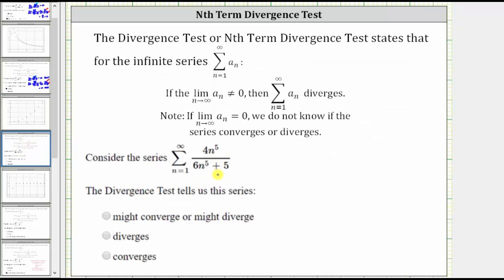Let's look at one more example — same question, different series. To apply the nth term divergence test, we need to determine the limit as n approaches infinity of a sub n, which is four n to the fifth divided by the quantity six n to the fifth plus five. Notice that in this case the degree of the numerator and denominator are the same — both five. When this is the case, the limit equals the ratio of the leading coefficients, which is four divided by six, or four-sixths, which equals two-thirds.